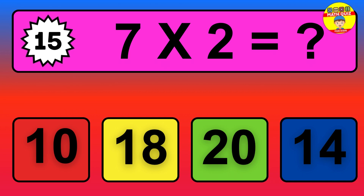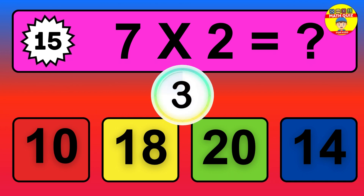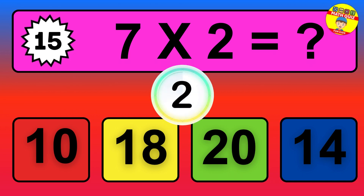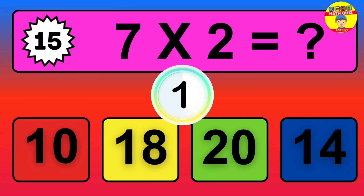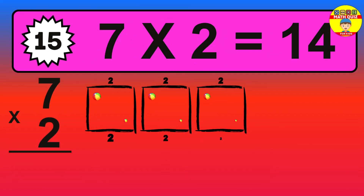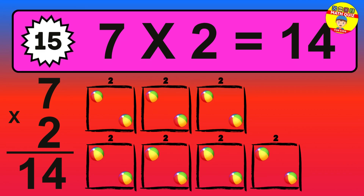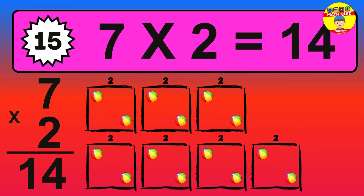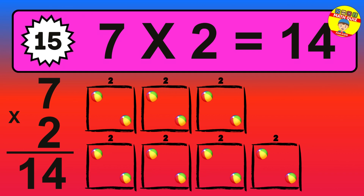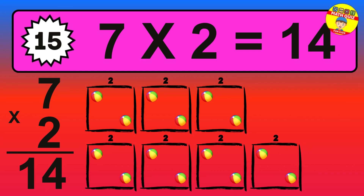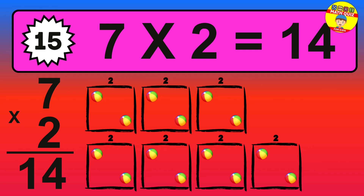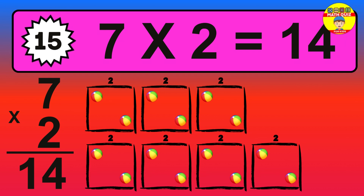Question fifteen: seven times two equals what? The answer is seven times two is fourteen. To calculate, we have seven groups with two balls each one. So how many balls do we have? Fourteen balls.